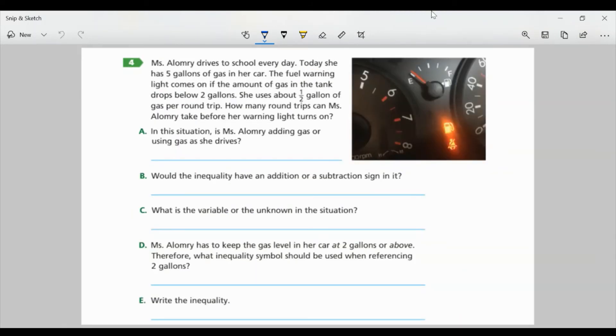Task 4. Ms. Alomri drives to school every day. Today, she has five gallons of gas in her car. The fuel warning light comes on if the amount of gas in the tank drops below two gallons. She uses about one half of a gallon of gas per round trip. How many round trips can Ms. Alomri take before her warning light turns on? Part A. In this situation, is Ms. Alomri adding gas or using gas as she drives? Well, when you're driving, you're obviously using gas.